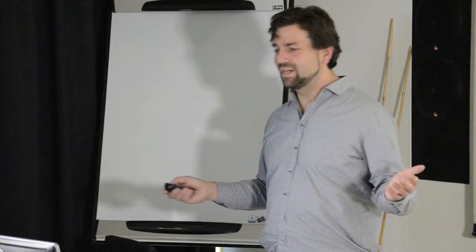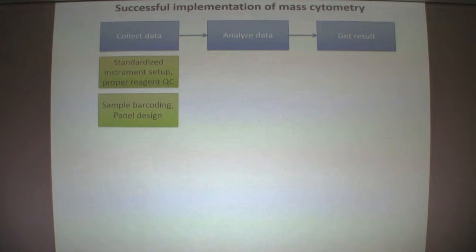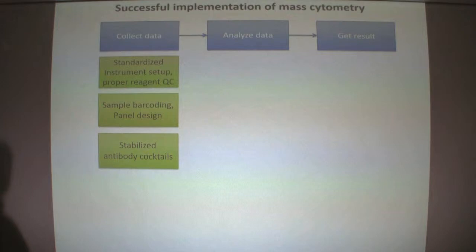We dealt a lot with generating tools and helping the data quality of mass cytometry. Things to keep in mind to make data very consistent include: standardized instrument setup and reagent quality control, sample barcoding to minimize technical error, stabilization of antibody cocktails — something used in flow cytometry but not yet in mass cytometry until we found a solution — and the use of reference beads and cell samples for tracking the performance of mass cytometry experiments and studies.